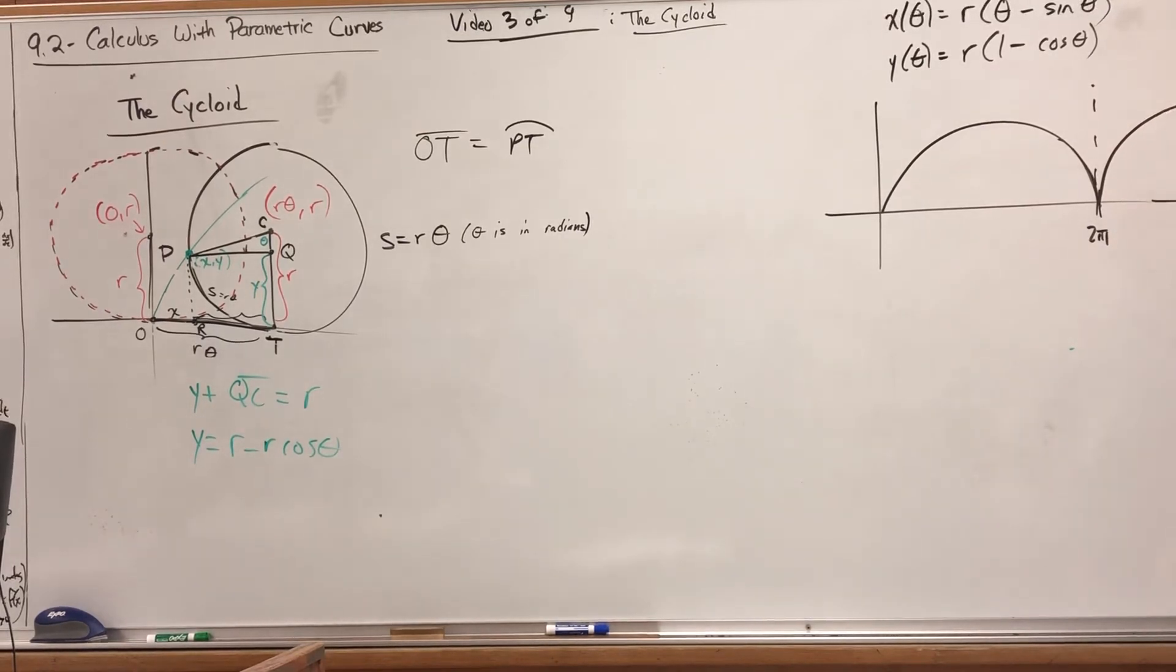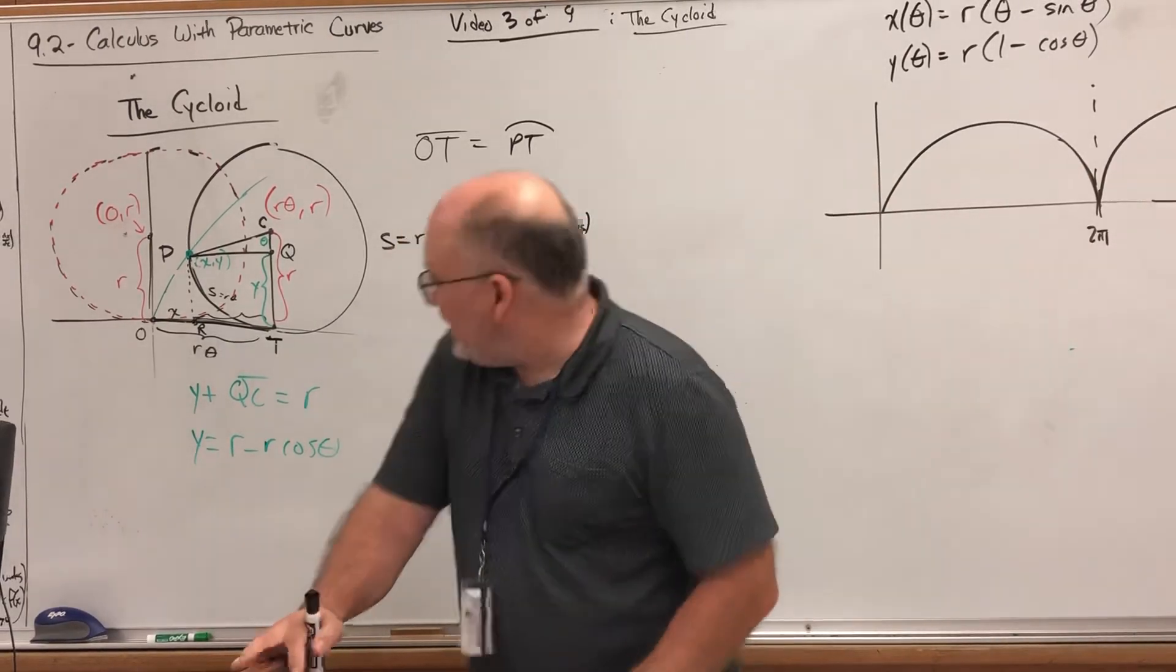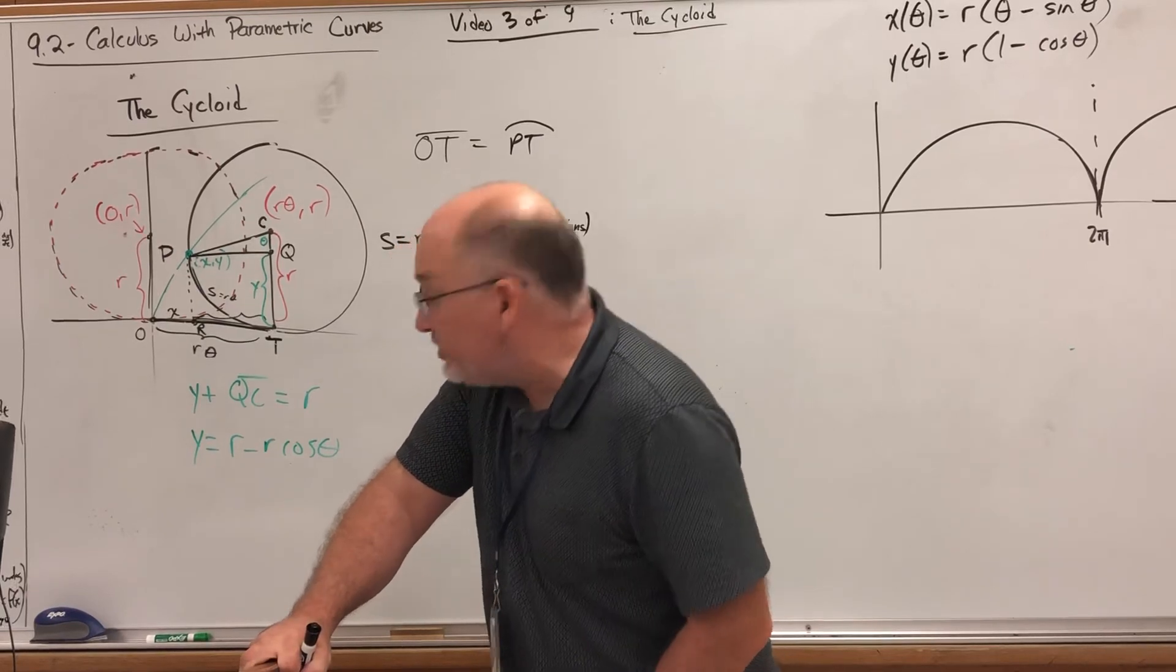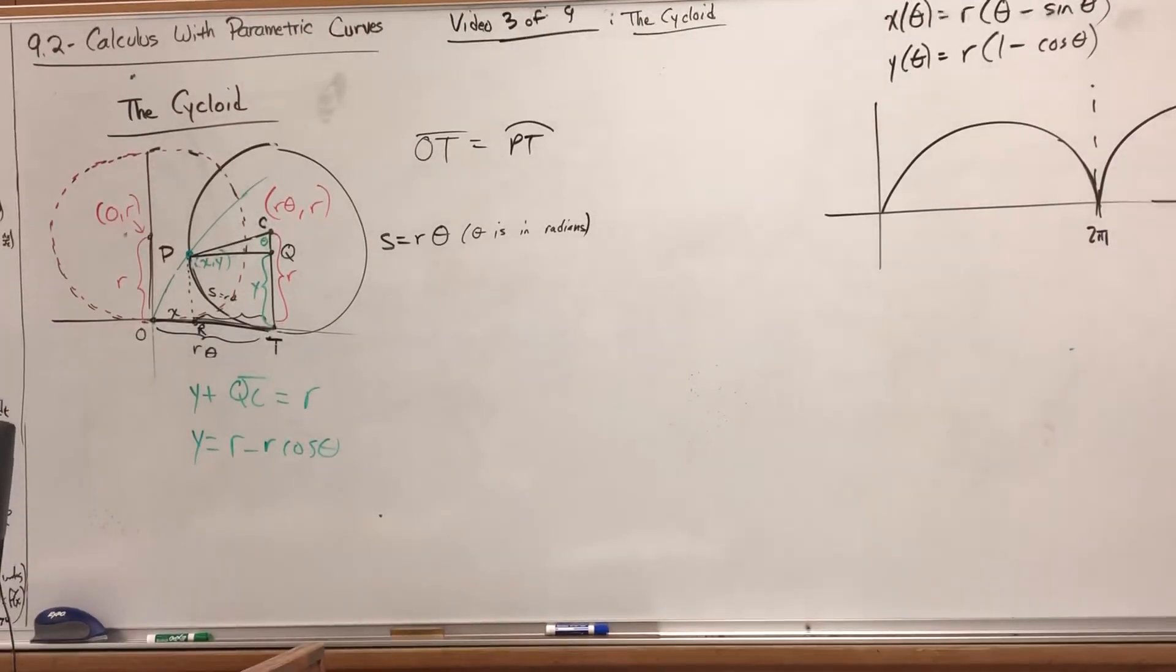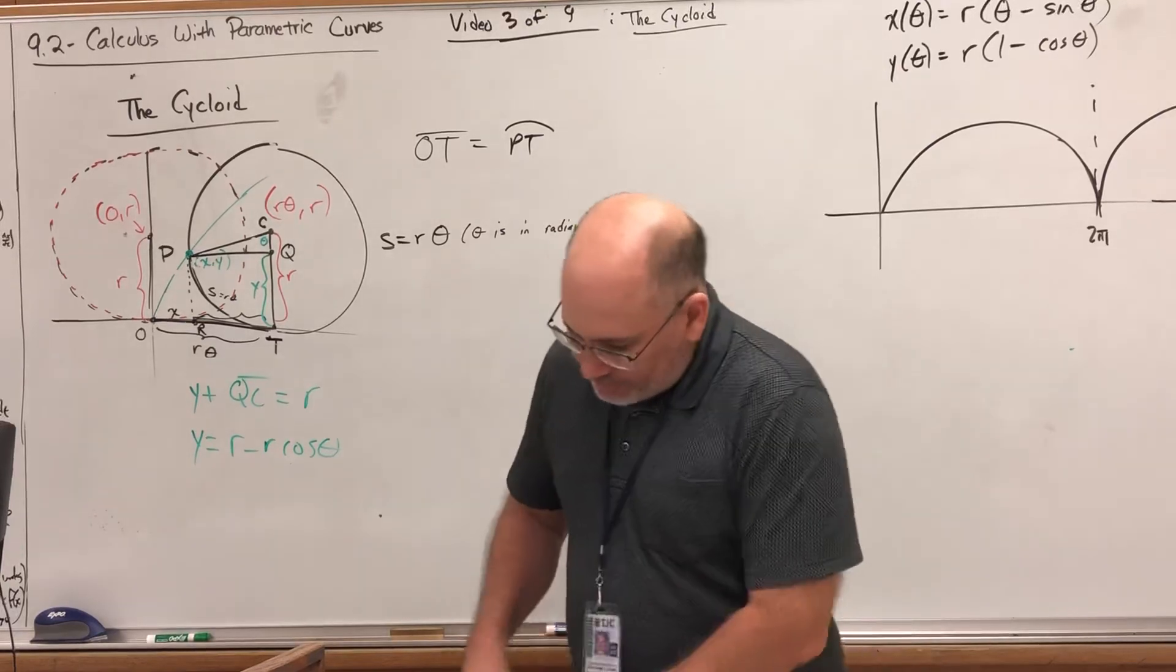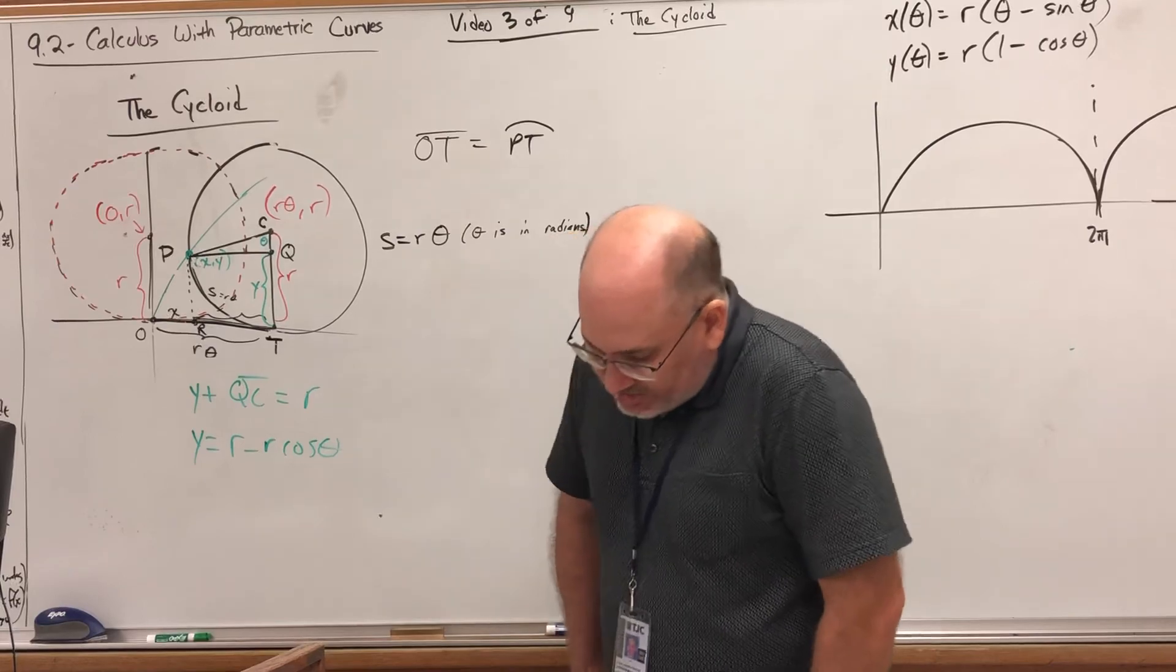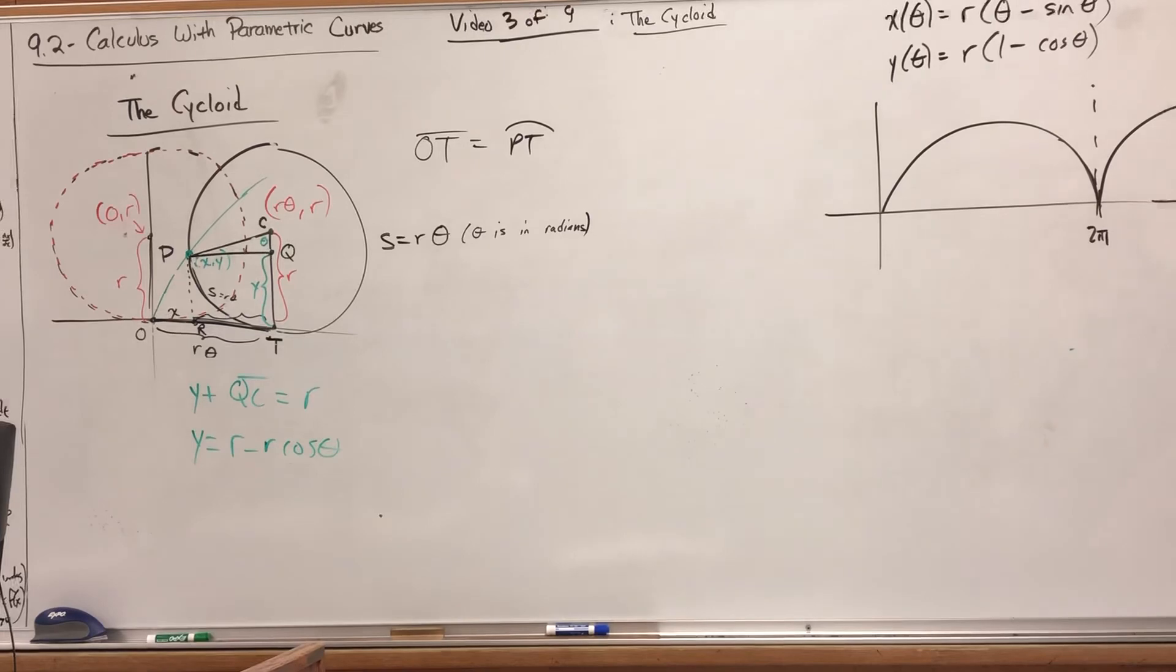In other words, our cycloid has a period of two pi, at which point it's going to bounce and go back up again. It looks like there's a vertical tangent line there. We can check it by solving the first derivative of the x-coordinate equal to zero, and you would see that yep, there's a vertical tangent line there.